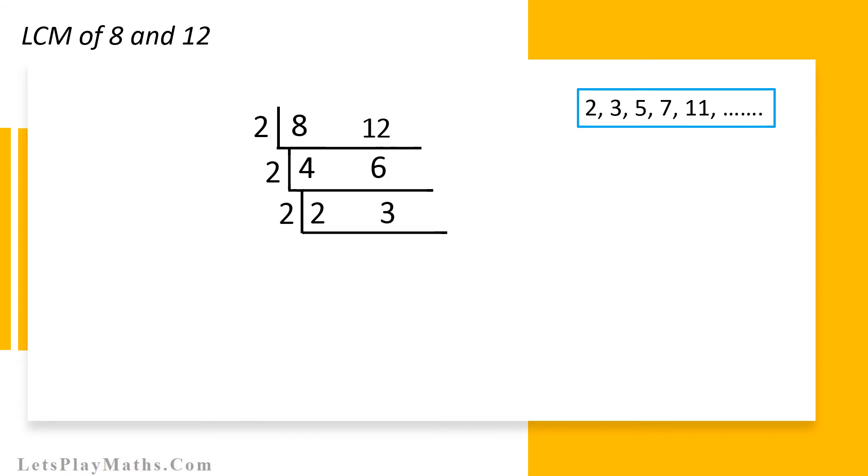Now, divide 2 by 2. The answer is number 1. And we know that number 3 cannot be divided by 2. So, let's bring down number 3 as shown here.